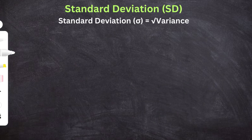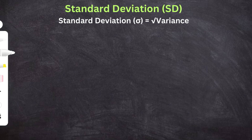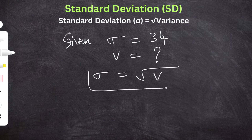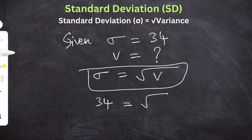Standard deviation is equal to the square root of variance. Given standard deviation = 34, we have to find variance. Since standard deviation = √variance, we get 34 = √V, so V = 34² = 1156.